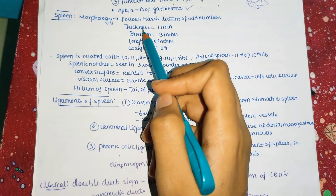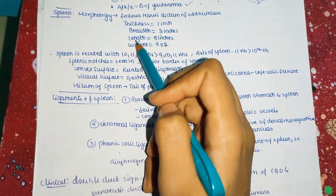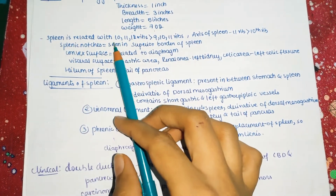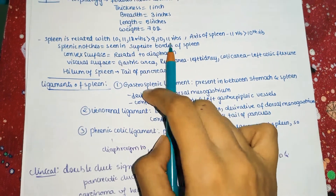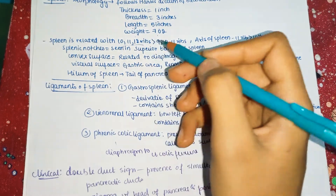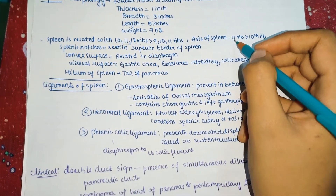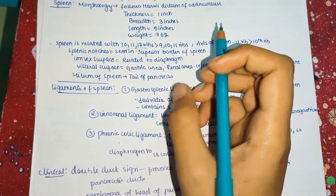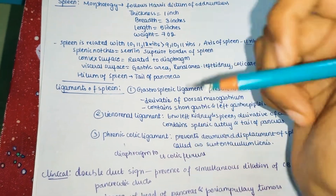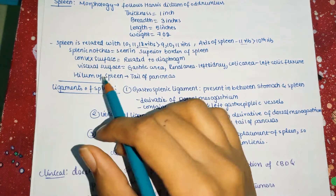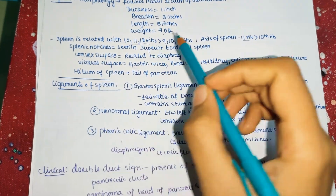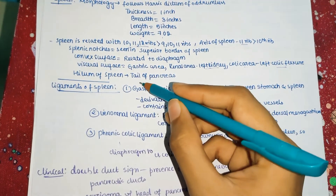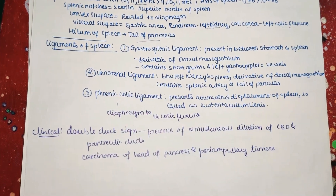Coming to the spleen: following Harry's dictum of odd numbers — thickness 1 inch, breadth 3 inches, length 5 inches, weight 7 ounces. The spleen is related to the 9th, 10th, and 11th ribs, with the axis along the 11th rib. Splenic notches are seen mainly on the superior border. The convex surface is related to the diaphragm; the visceral surface is related to the gastric area, renal area (left kidney), colic area (left colic flexure), and the hilum contains the tail of pancreas.